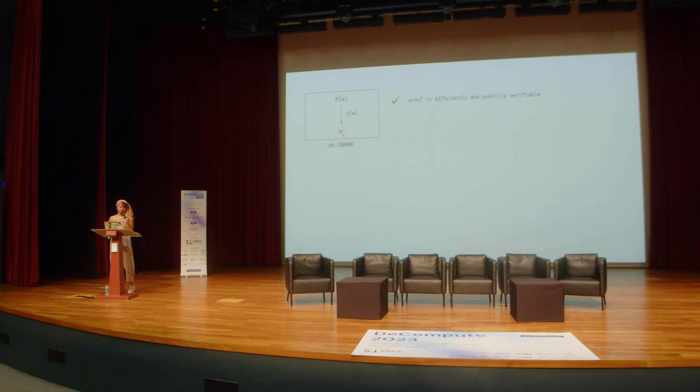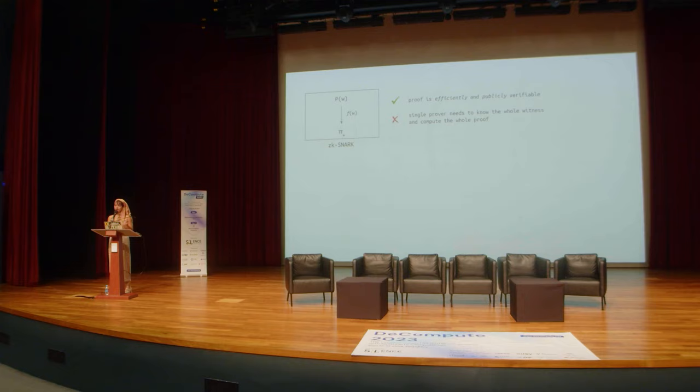The shape of a ZKSNARK is as such: it produces a proof that is efficiently and publicly verifiable, and besides revealing the validity of the witness, it reveals no other information about this witness. Something that might be inconvenient about a ZKSNARK is that a single prover needs to know the whole witness and carry out the whole proving process.